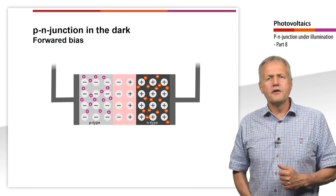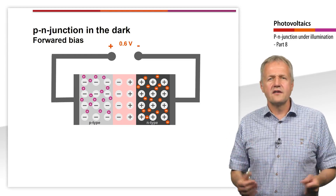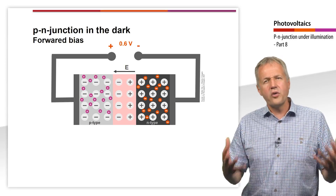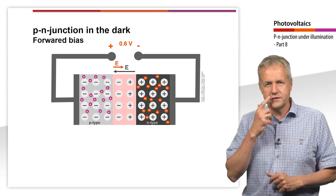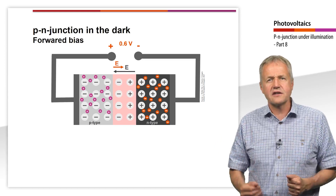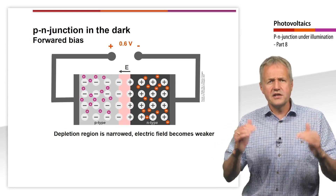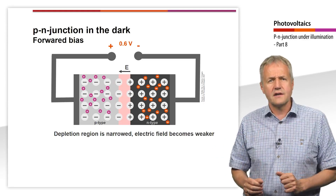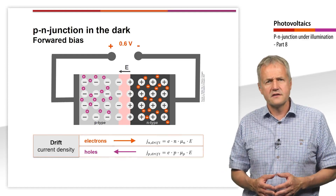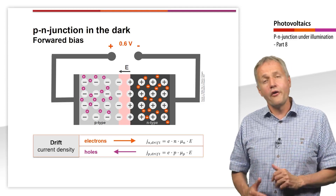We now apply a voltage source with approximately 600 mV to the p-n junction, so that the negative pole is connected to the n-region and the positive pole to the p-region. At this polarity, we call the bias voltage forward voltage. The forward voltage creates an electric field which counteracts the electric field created by the p-n junction, reducing the electric field and narrowing the width of the depletion region. As the electric field decreases, the drift current densities of the minorities also decrease.